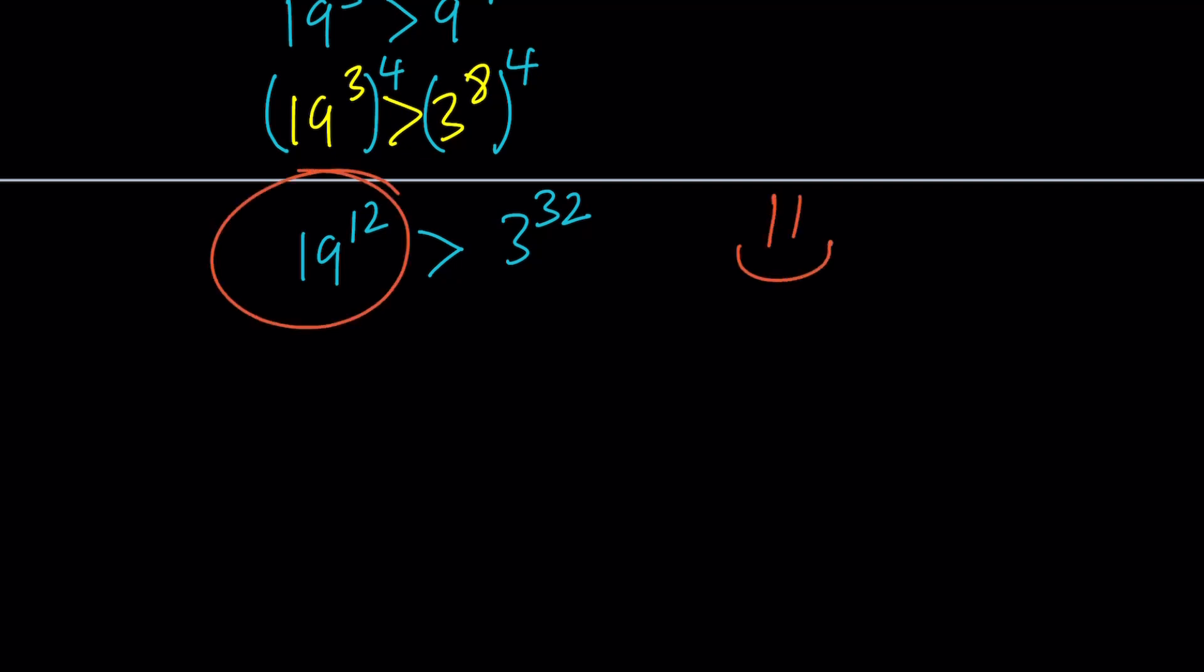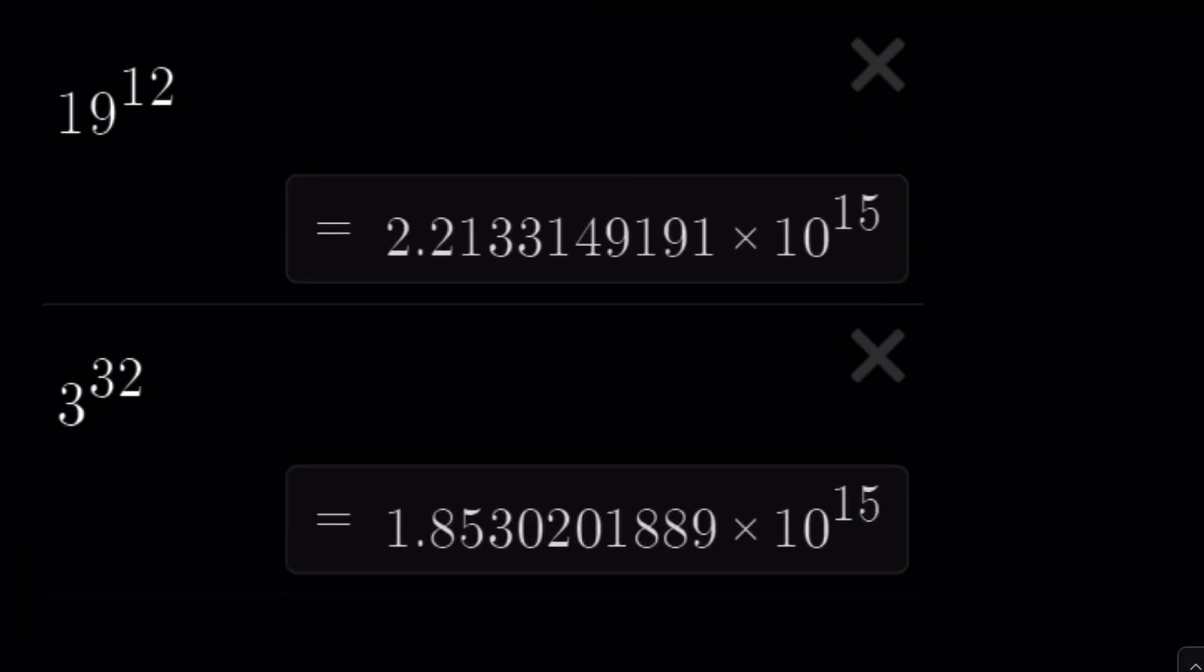This doesn't bring us to the end, because I still have to show you some numerical facts. Let's go ahead and take a look. First of all, numerically, 19 to the power 12 is about 2.2 times 10 to the power 15. And the other number is obviously smaller, 1.85 times 10 to the 15. So they're about the same order of magnitude, right? Or the same order of magnitude. They're pretty close. Their ratio, if you look at their ratio, obviously, that's going to be less than 1. So that's nice.